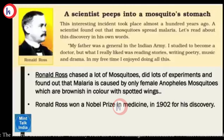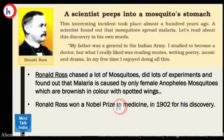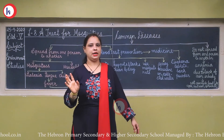A scientist named Ronald Ross peered into the mosquito's stomach and did an experiment. He chased many mosquitoes, conducted many experiments, and found that malaria is caused only by the female Anopheles mosquito, which is brownish in color with spotted wings. Ronald Ross won a Nobel Prize in medicine in 1902 for his discovery.